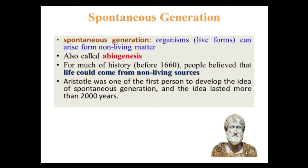Before discussing other scientists, we can discuss the theory of spontaneous generation. The theory of spontaneous generation states that life forms can arise from non-living matter; this theory is also called the theory of abiogenesis. For much of history, people believed that life could come from non-living sources. Aristotle was one of the first persons to develop the idea of spontaneous generation, and the idea lasted more than 2000 years.